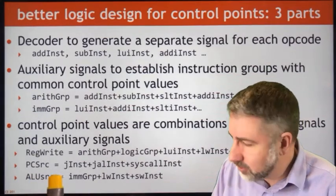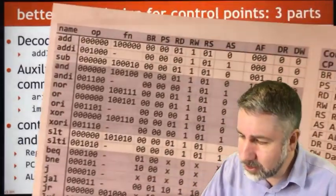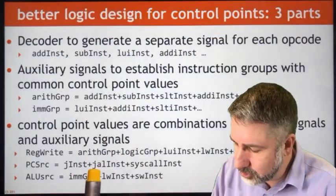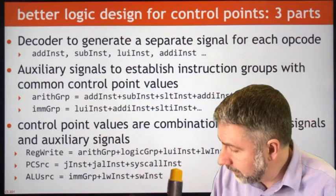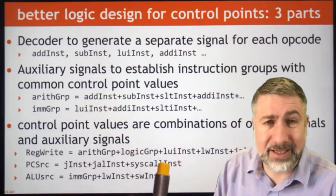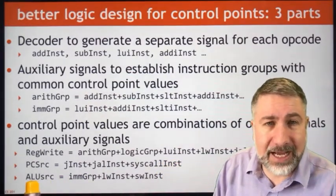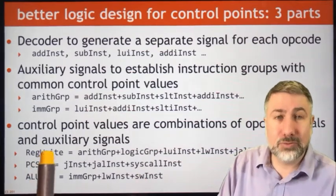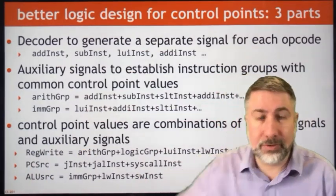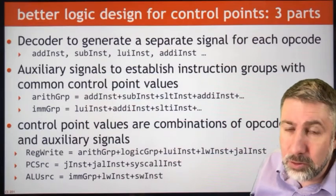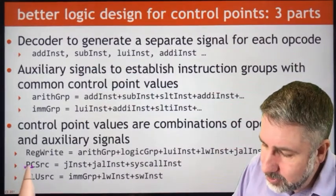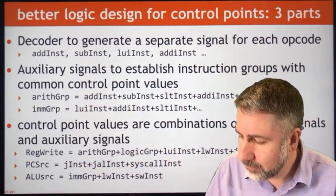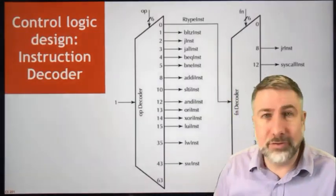For example, PC source (PS) is 01 for J and JAL instructions, and ALU source is 1 for the immediate group, load word, and store word instructions, and 0 for everything else. Register write is true for arithmetic, logic, load upper immediate, load word, and jump-and-link instructions, and false otherwise. Note that one slide shown here is incorrect on register write, so make a note of that. The control point values are built from individual instruction signals combined with these intermediate auxiliary signals.